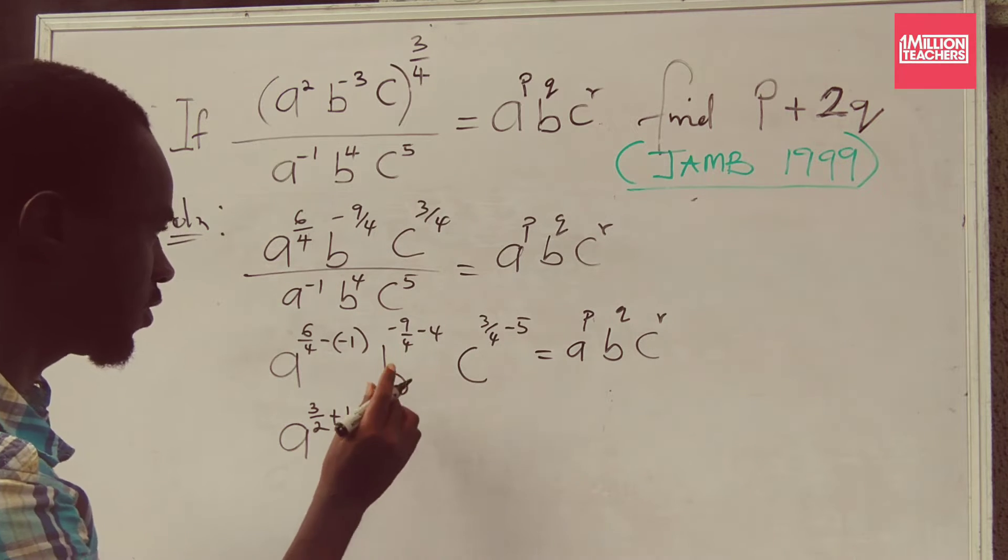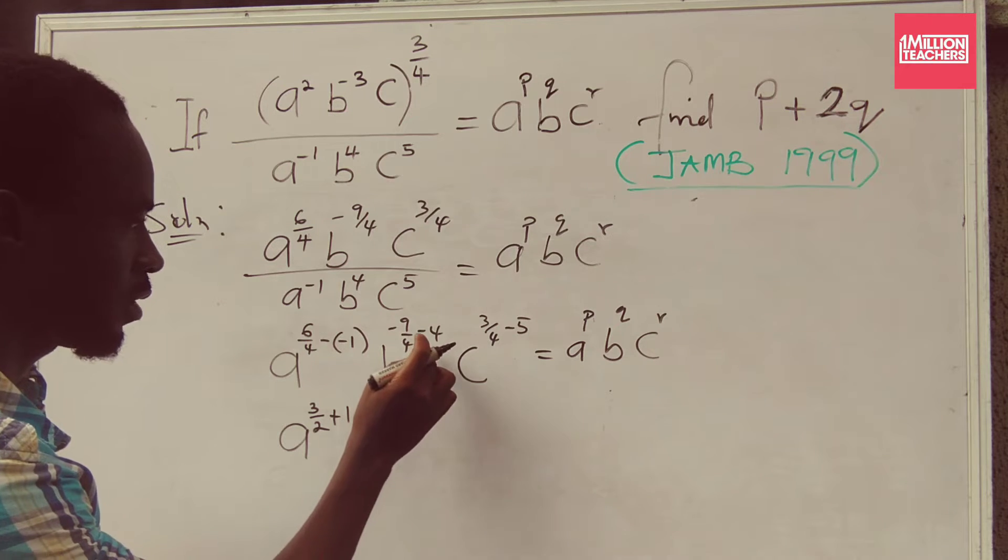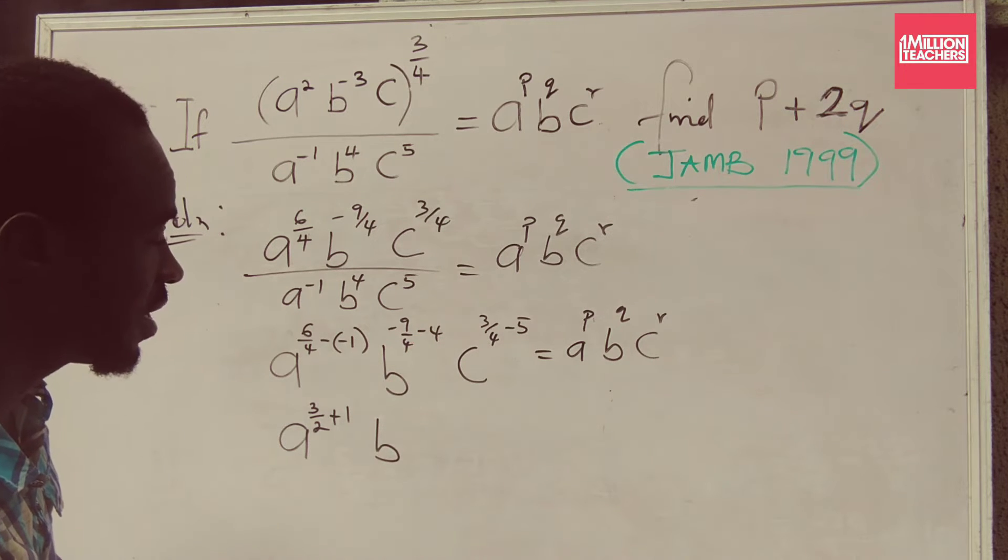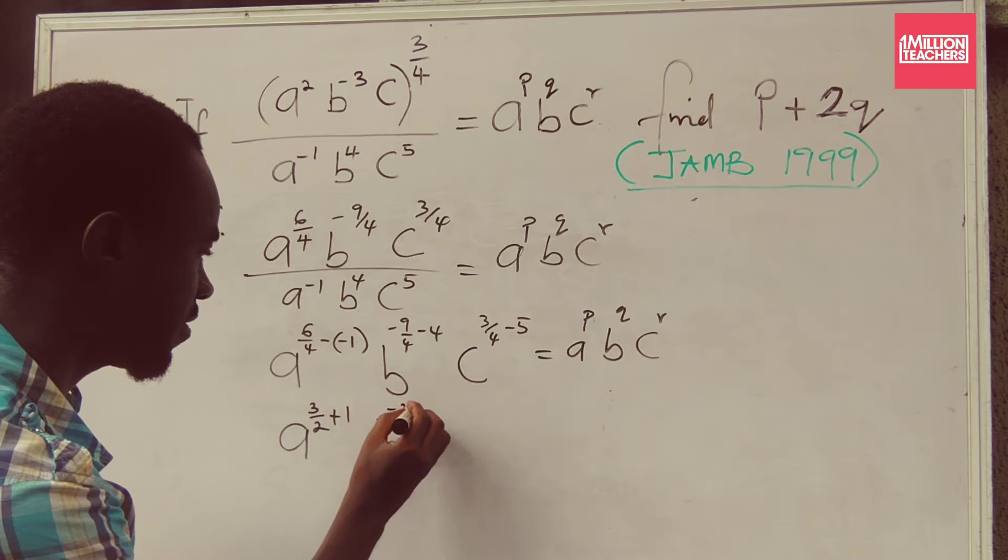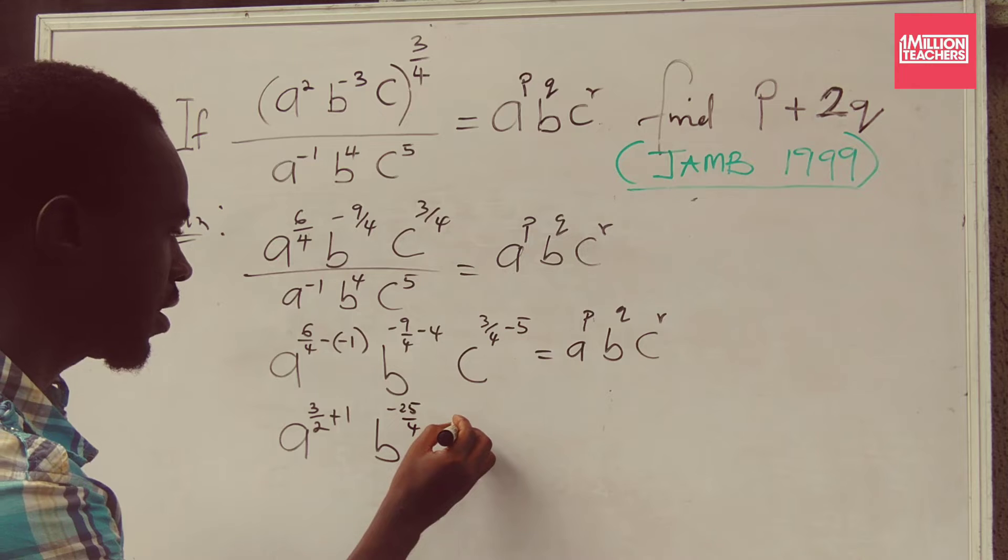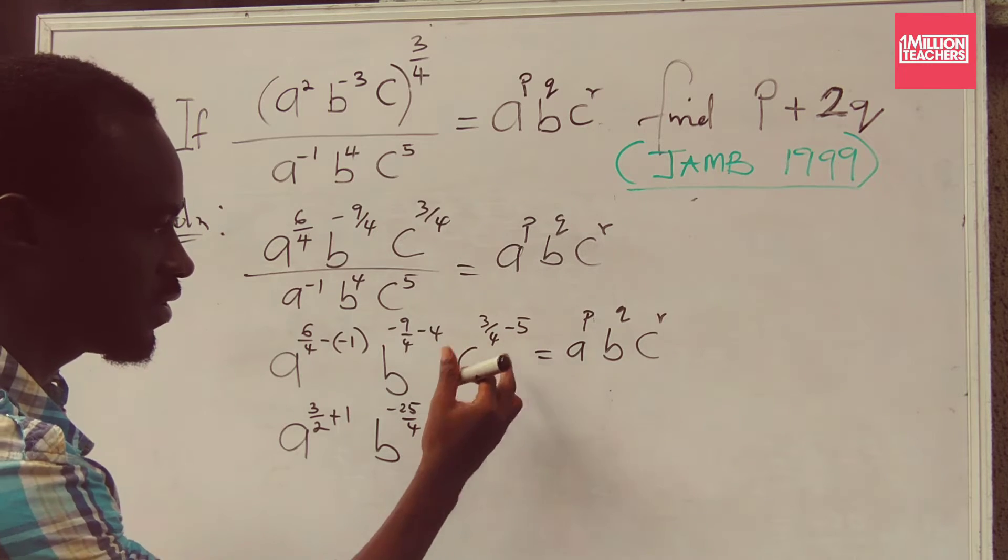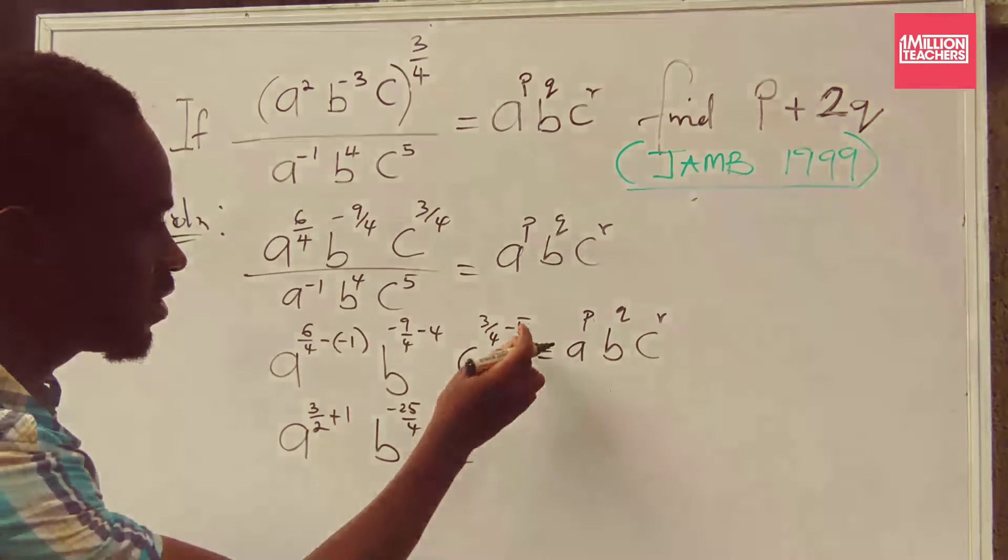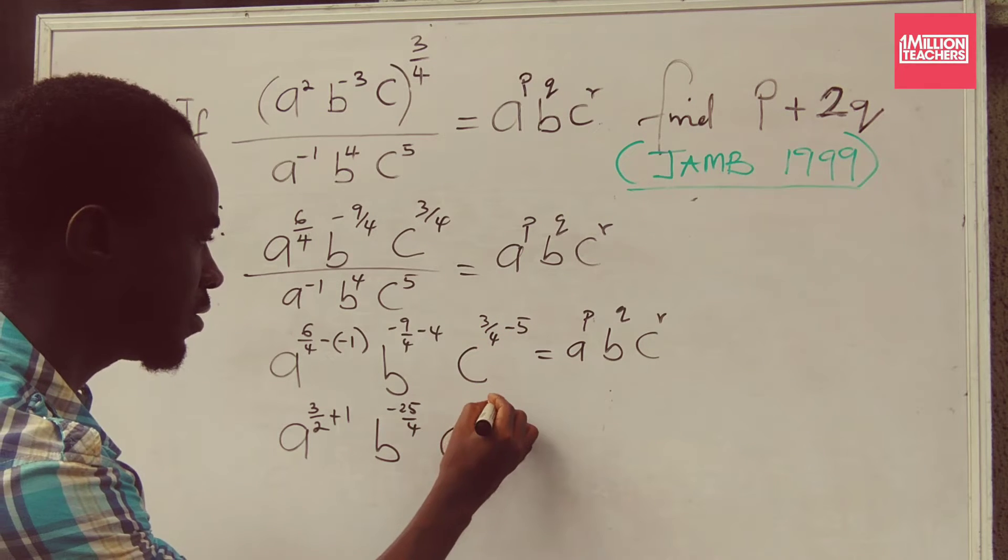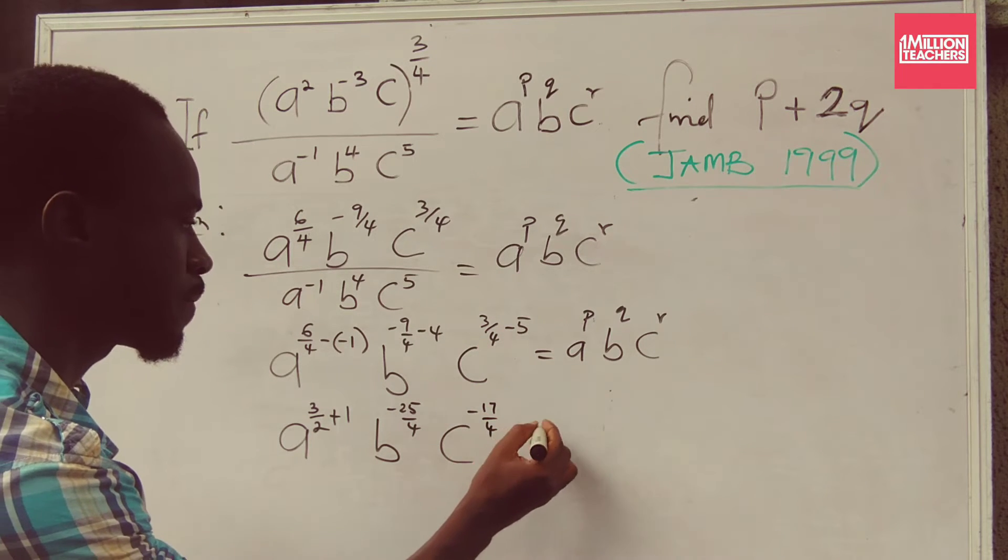This is going to give me, remember, this minus 4 is the same thing as minus 16 over 4. So I'm having minus 25 over 4 here. And then this one is the same thing as minus 20 over 4, which means I'm going to have minus 17 over 4 here.